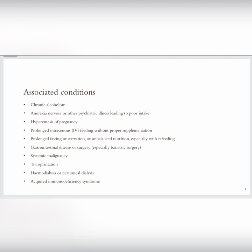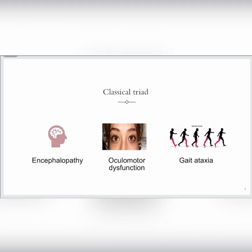Thiamine deficiency can affect both the central nervous system and cardiovascular system. If it affects the cardiovascular system, it is called wet beriberi. If it affects the central nervous system, it is called dry beriberi, which contains signs such as Wernicke encephalopathy.